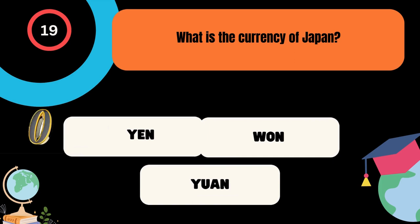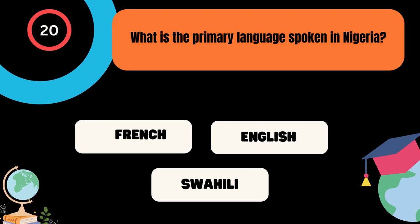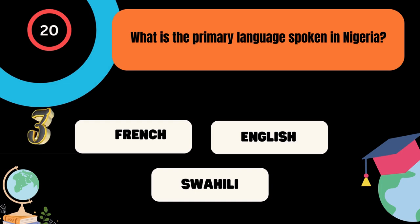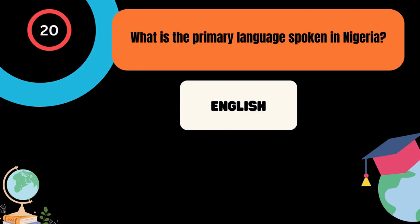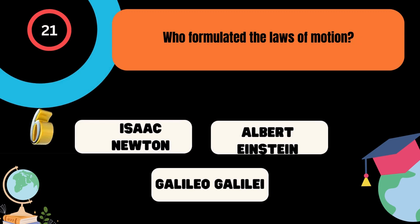What is the primary language spoken in Nigeria? A. French, B. English, C. Swahili. And the correct answer is English. Who formulated the laws of motion? A. Isaac Newton, B. Albert Einstein, C. Galileo Galilei. The correct answer is Isaac Newton.